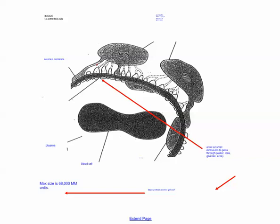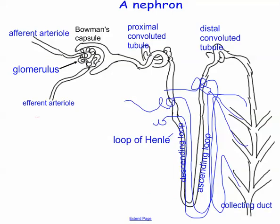Now that we've familiarized ourselves with the main parts of the nephron, let's take a journey through each one of these places. The first thing to mention is that the afferent arteriole is wider than the efferent arteriole, and what that does is it causes higher pressure in this area.